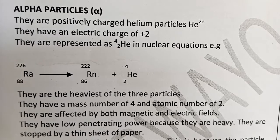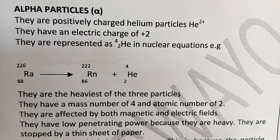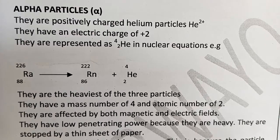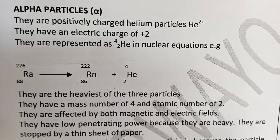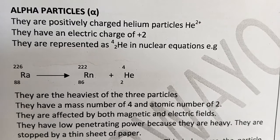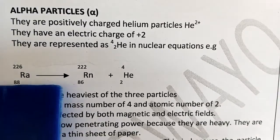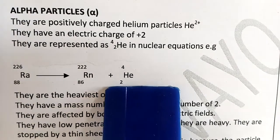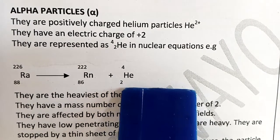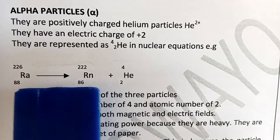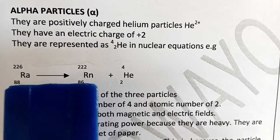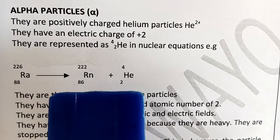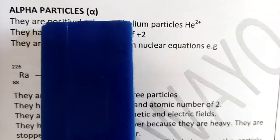Alpha particles have an electric charge of positive two and are represented as a helium atom in nuclear equations. For example, radon emits an alpha particle represented as He-4-2. We will discuss nuclear equations and their balancing in detail, but this gives an example of how alpha is represented.